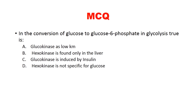MCQ 3 (from INISET exam): In the conversion of glucose to glucose-6-phosphate in glycolysis, which statement is false? Glucokinase has high Km and low affinity — correct. Hexokinase is found in almost all cells — correct. It is glucokinase that is found in adult liver and beta pancreatic cells — correct. Glucokinase is induced by insulin — correct. Hexokinase is not specific for glucose — correct. Two options are correct.